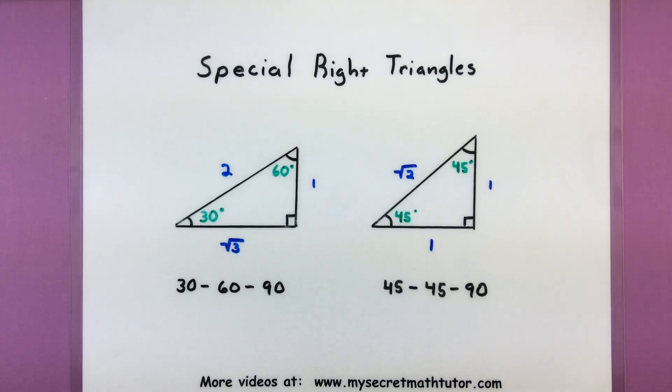Hello and welcome to My Secret Math Tutor. For this video we're going to learn about some very special right triangles known as the 30-60-90 triangle and the 45-45-90 triangle. We're going to use these triangles to help us find some key values of our trigonometric functions.